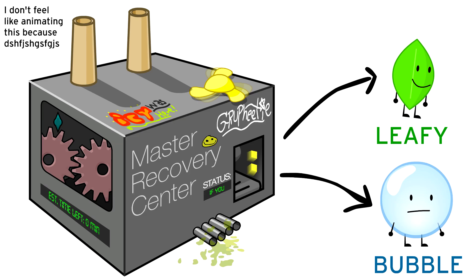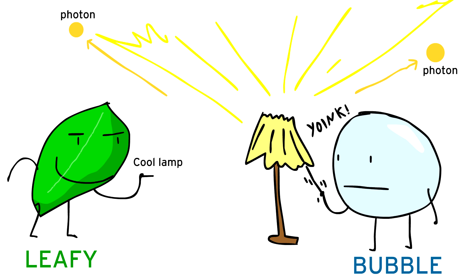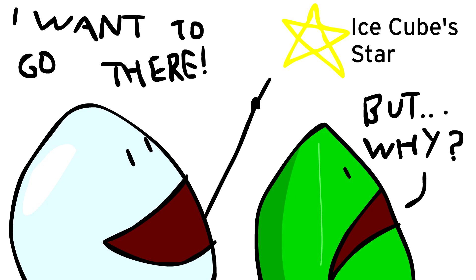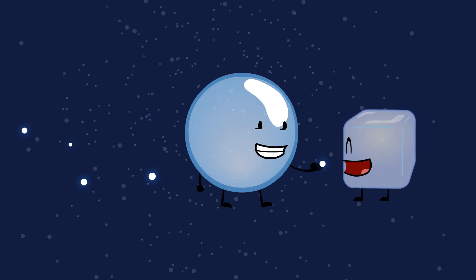Right when Leafy and Bubble are born, Leafy watches Bubble turn on a lamp from nearby. Five years later, Bubble decides to go to Ice Cube's star. You know what star I'm talking about. Hey Ice Cube, look! It's the Big Dipper! This star is for you! Thanks!